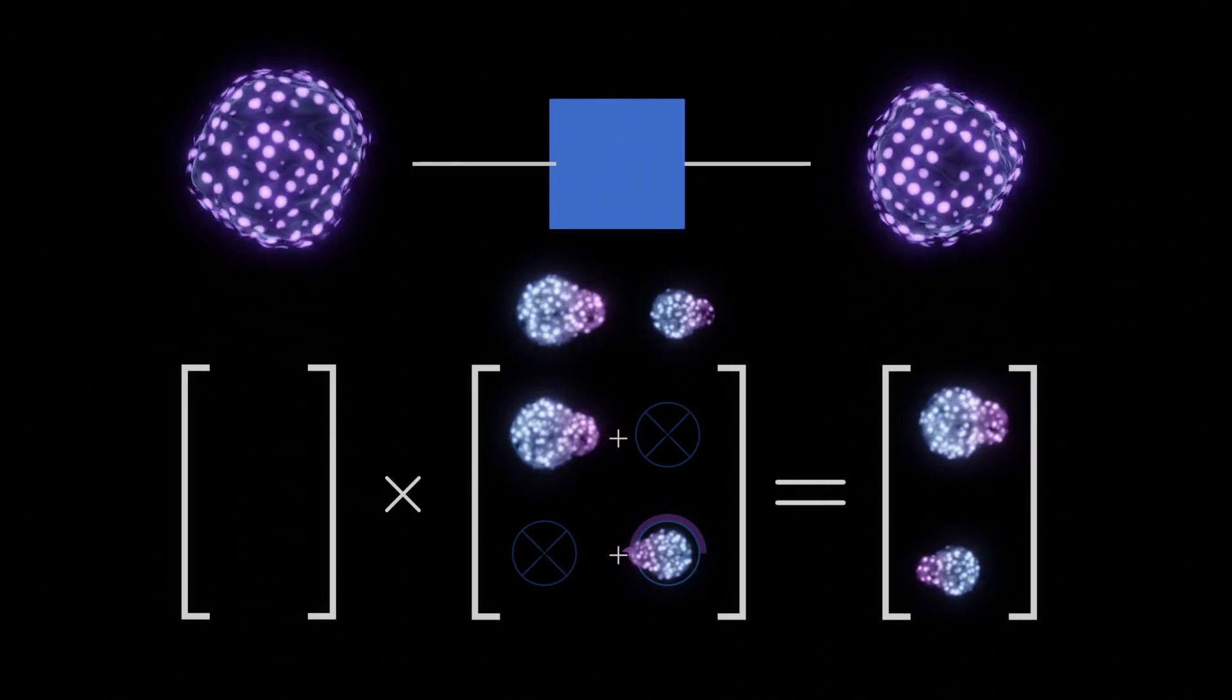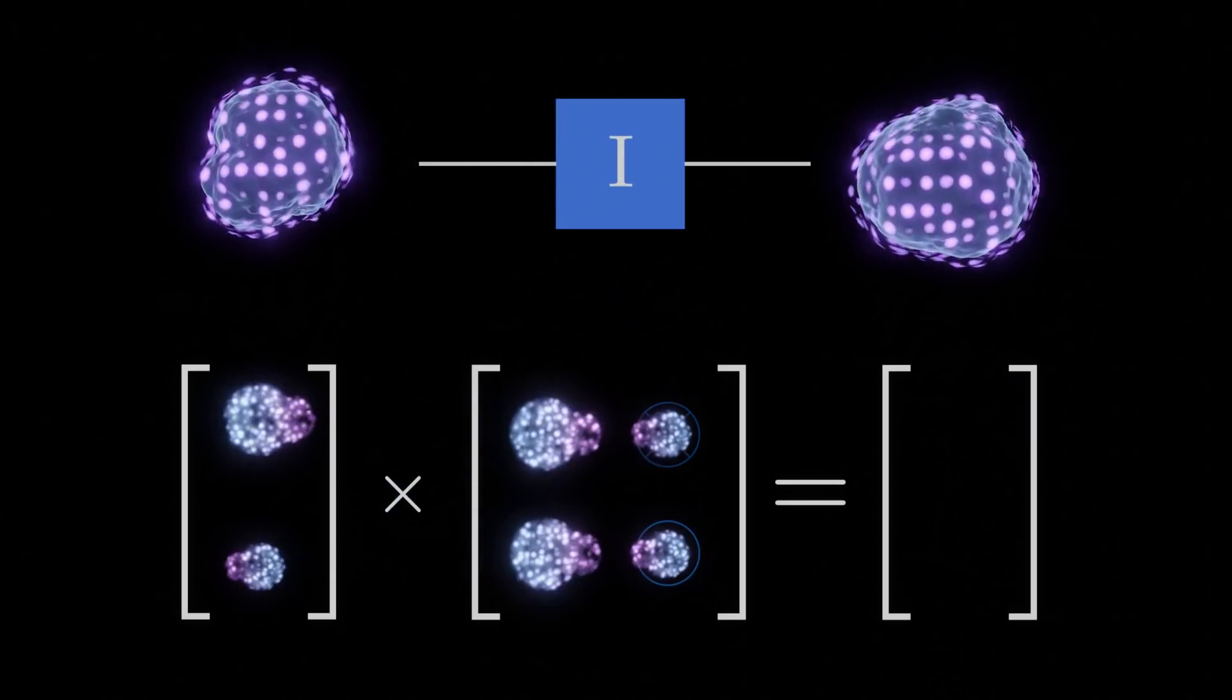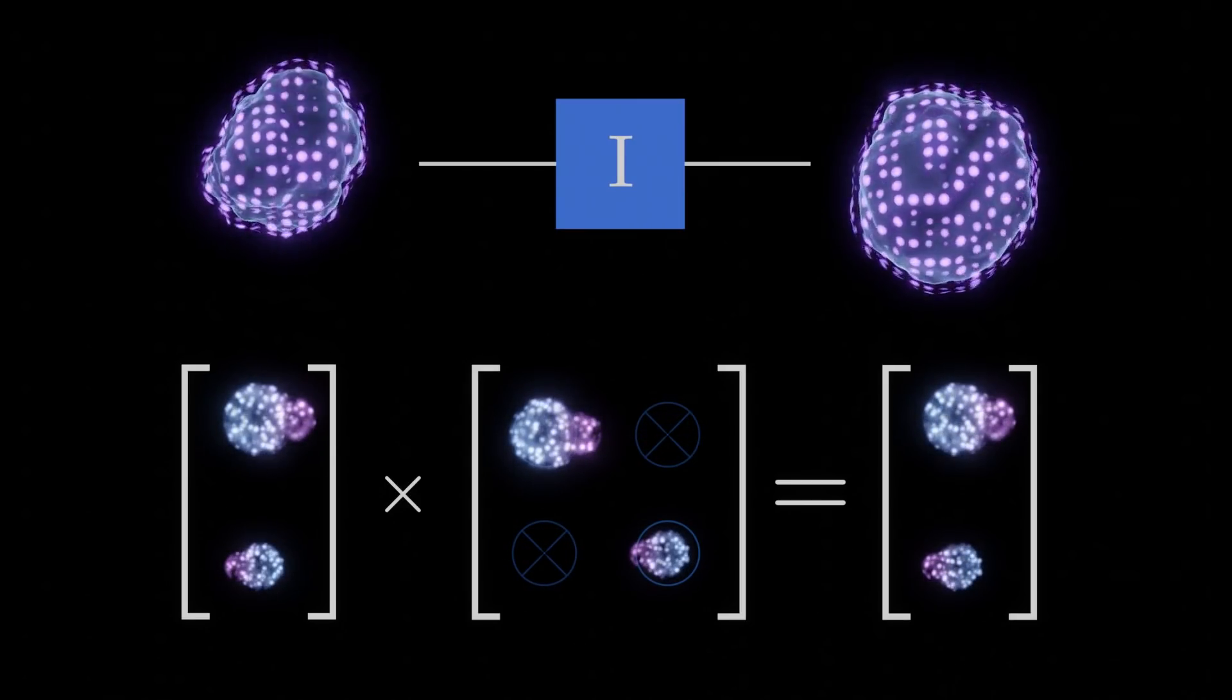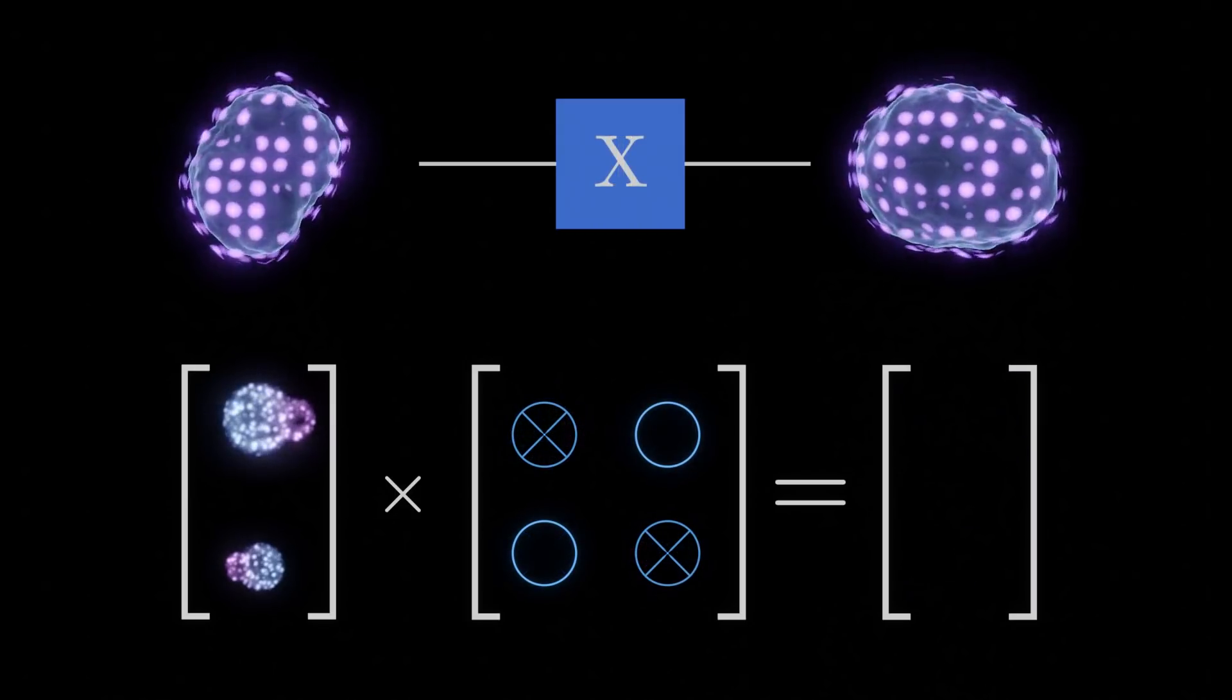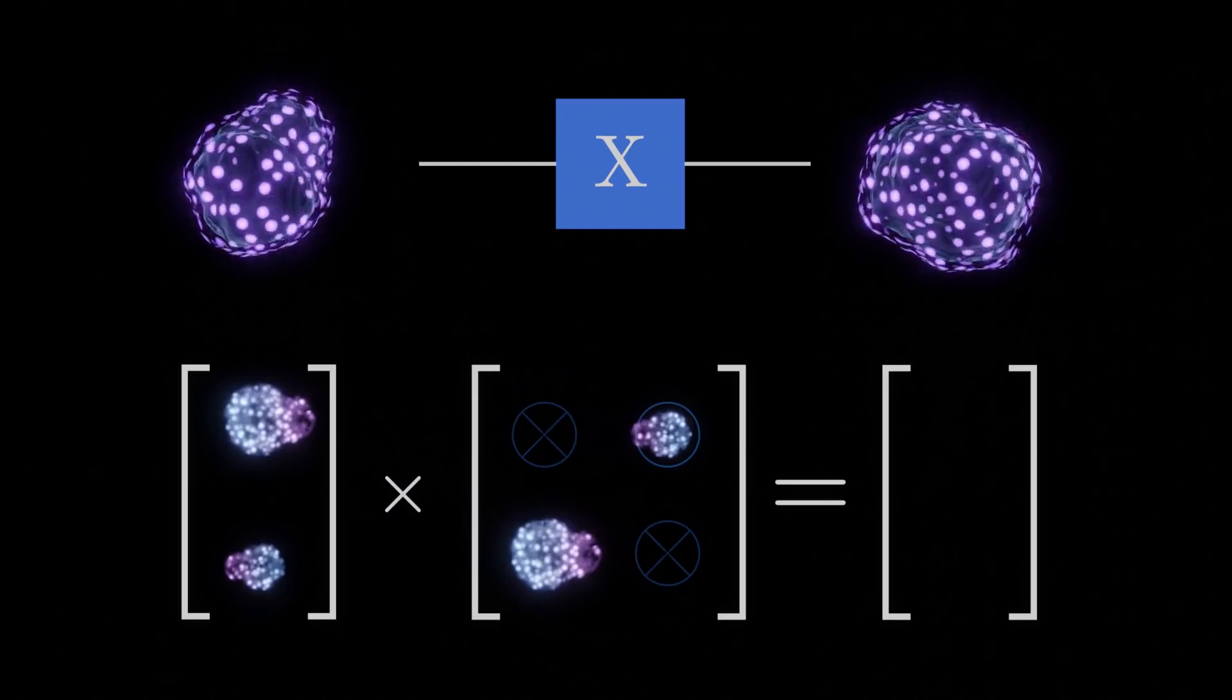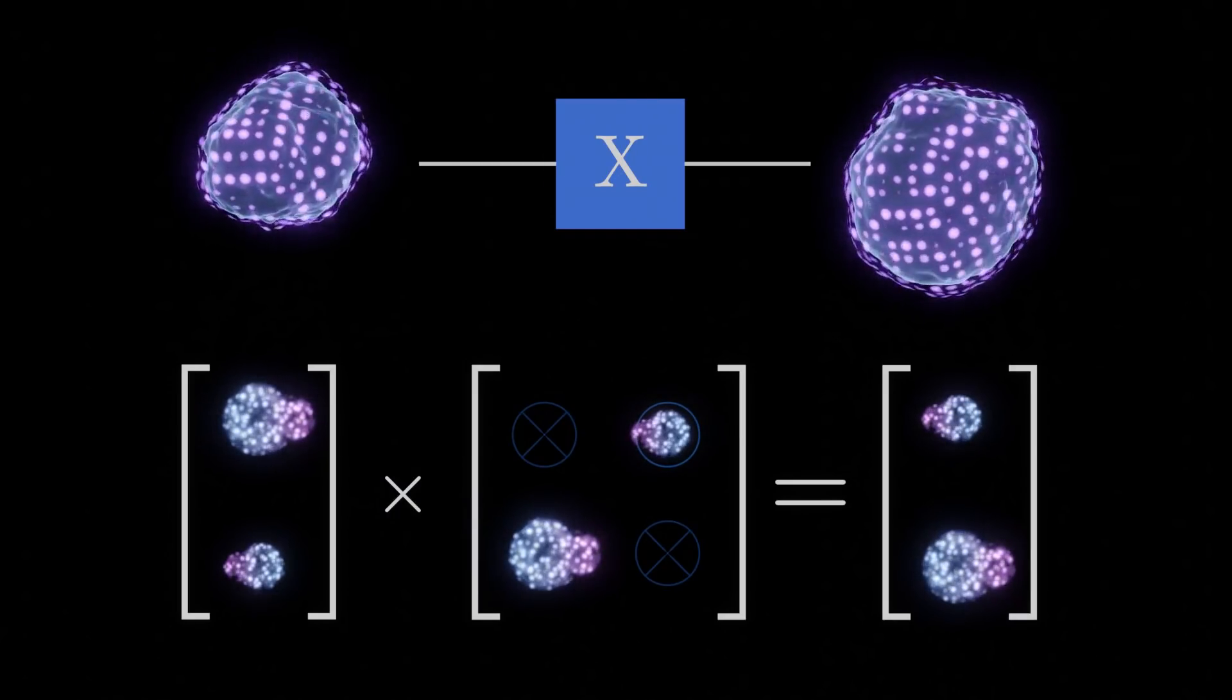The simplest gate is the identity gate, represented with the letter I. Qubits come out with the exact same probability vector they came in with. Slightly more useful is the NOT gate, represented with the letter X. It effectively swaps the probabilities of the 0 and 1 states. This is analogous to how the NOT gate works in classical computing.